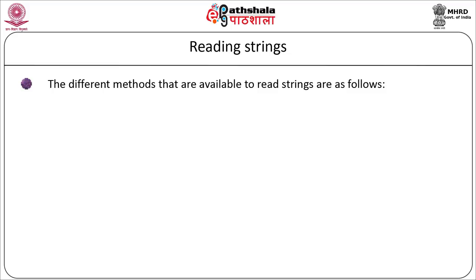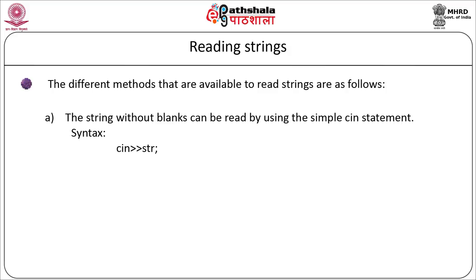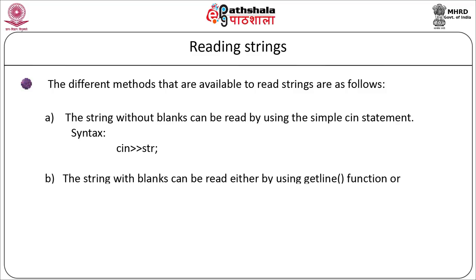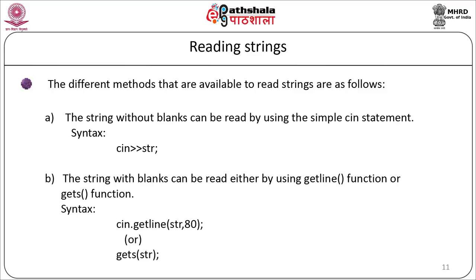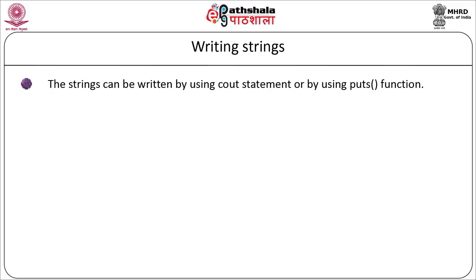The different methods to read strings are: strings without blank spaces can be read using cin with the extraction operator. Strings with blank spaces can be read using the getline function — syntax: cin.getline(str, 80) — or using the gets function: gets(str). Strings can be written using cout or the puts function: puts(str). The header file cstdio must be included whenever gets or puts are used.